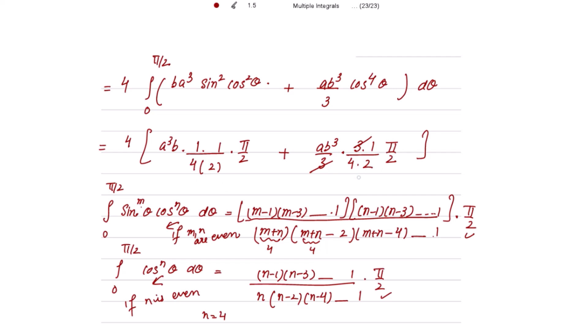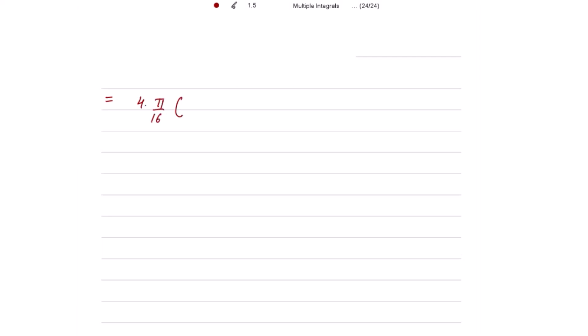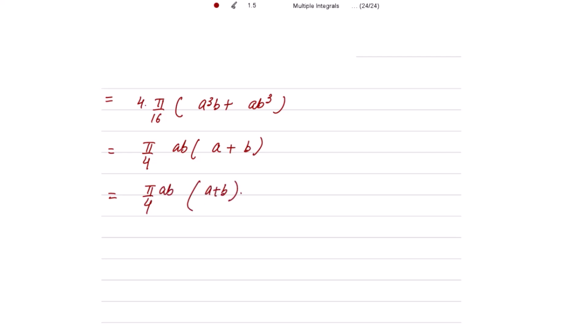Both terms give π/16, so taking π/16 outside: 4 × (π/16) × (a³b + ab³) = (π/4) × ab(a + b). Taking ab common gives the final answer: π/4 · ab(a + b). This is how we solve this double integral over the ellipse.